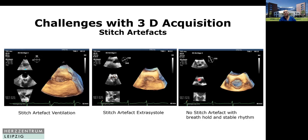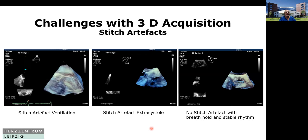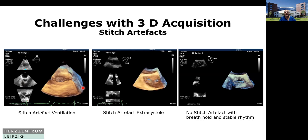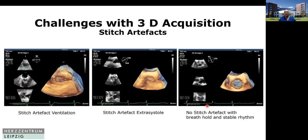This is a perfect four-beat acquisition — you see also in the 2D images there is no interruption in the image. Let me show that comparison: this is the stitch artifact here, this is the stitch artifact, and this is perfect — no stitch artifact because this is recorded with breath hold and the patient has a stable rhythm.